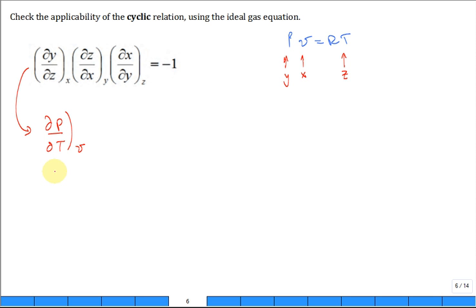Multiply that by the partial of temperature with respect to specific volume holding pressure constant. Multiply by the partial of V with respect to pressure holding temperature constant. And now I want to find out if that truly is equal to negative 1.